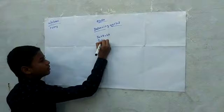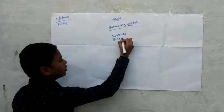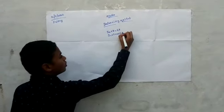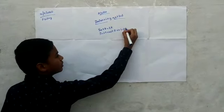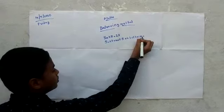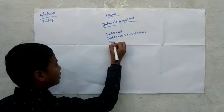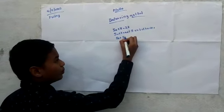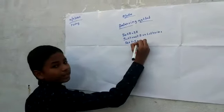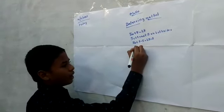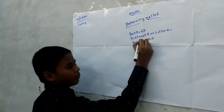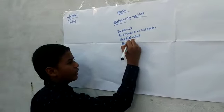Subtract 5 on both sides. 5x plus 5 minus 5 is equal to 25 minus 5. 5x plus 5 minus 5 cancel. 5x is equal to 20.